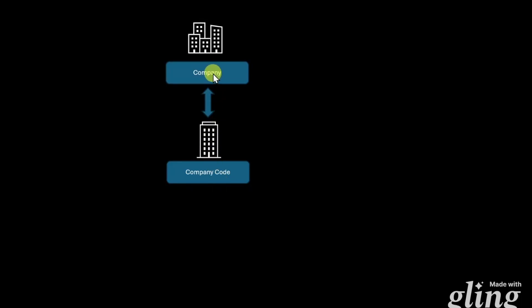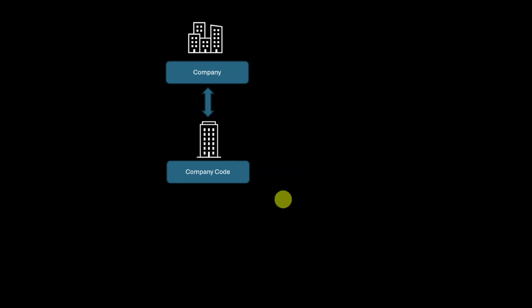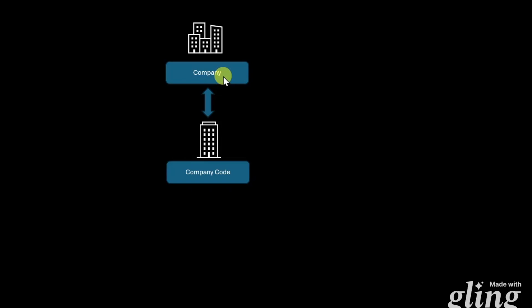First of all, you can see here the so-called company code. The company code is the most important organizational object for our financial module in SAP. Without a company code, we cannot use finance. This company code is linked to a so-called company. Such a company is like a company code from the consolidation perspective — it's used for reporting purposes of our financial group. A single company code can only be assigned to exactly one company.